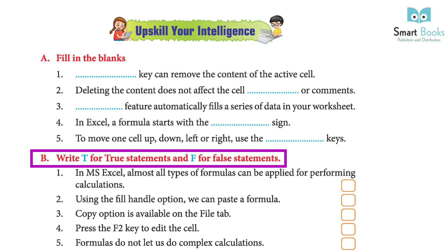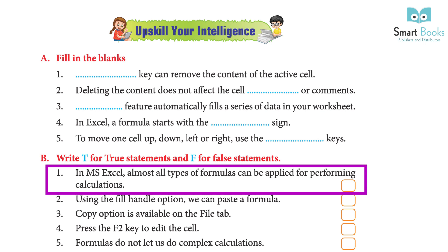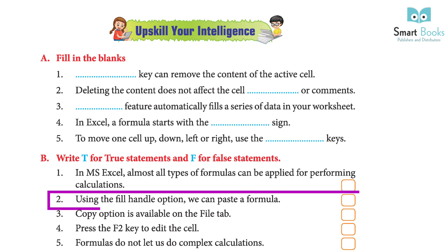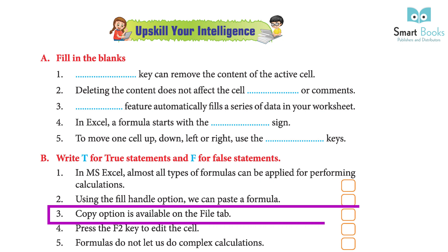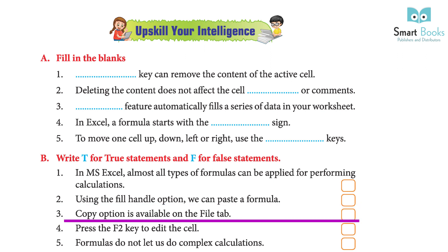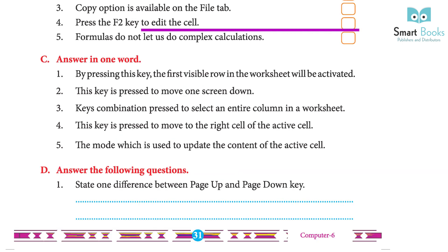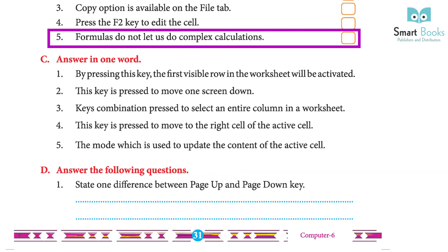B. Write T for true statements and F for false statements: 1. In MS Excel, almost all types of formulas can be applied for performing calculations. Answer: True. 2. Using the fill handle option, we can paste our formula. Answer: False. 3. Copy option is available on the File tab. Answer: False. 4. Press the F2 key to edit the cell. Answer: True. 5. Formulas do not let us do complex calculations. Answer: False.